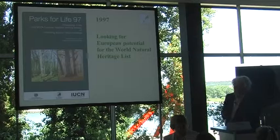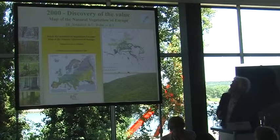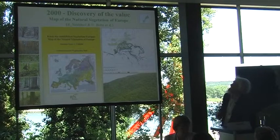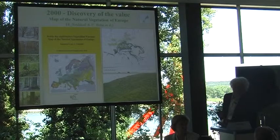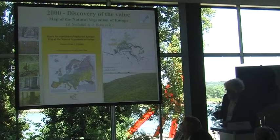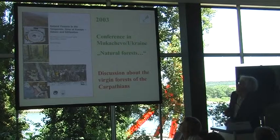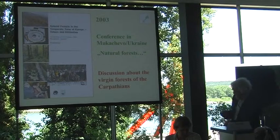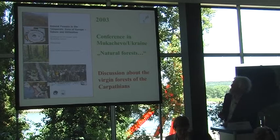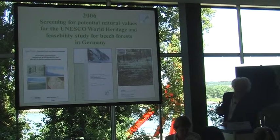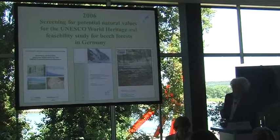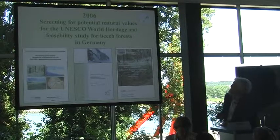Twenty years before, we looked in a European working session of IUCN and WCPA for potential natural heritage sites in Europe, and with this map of natural vegetation of Europe, the natural value of beech forests in Europe were discovered. In a conference in Ukraine, the question of World Heritage for beech forests was discussed for the first time, about the virgin forests of the Carpathians.